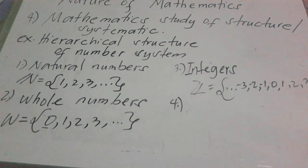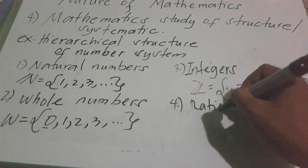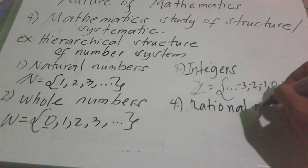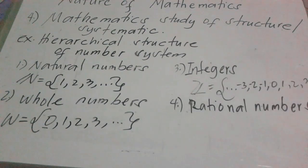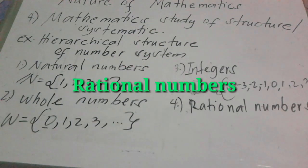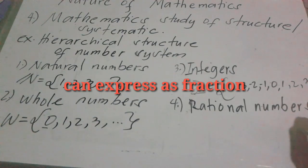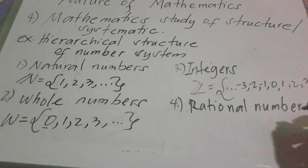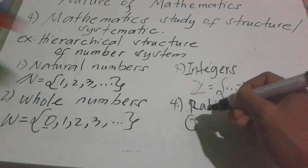Next, we have the rational numbers. So what are rational numbers? Rational numbers are numbers that can be formed or expressed as a fraction — they can be expressed as a ratio. The symbol for rational numbers is Q.